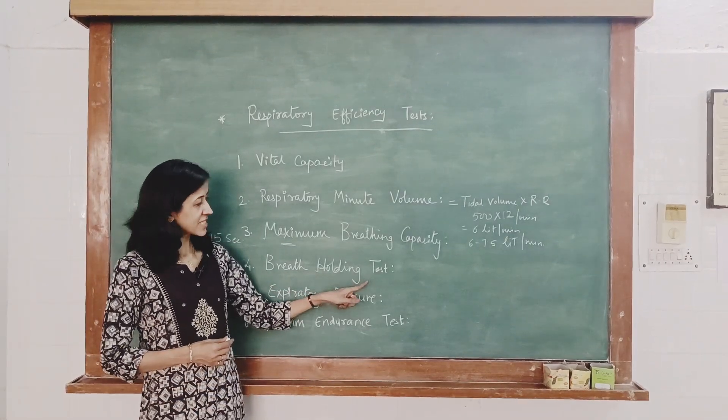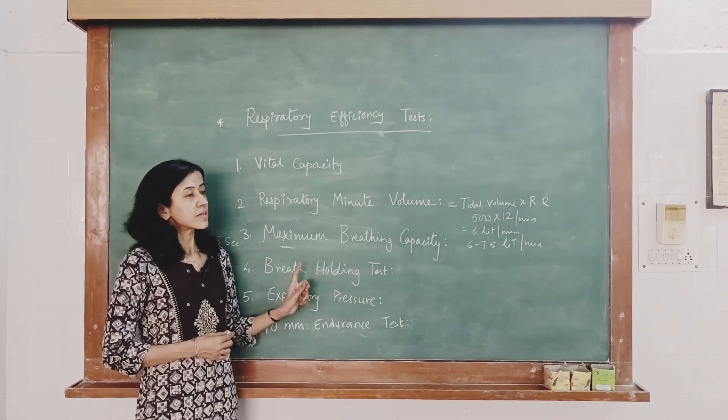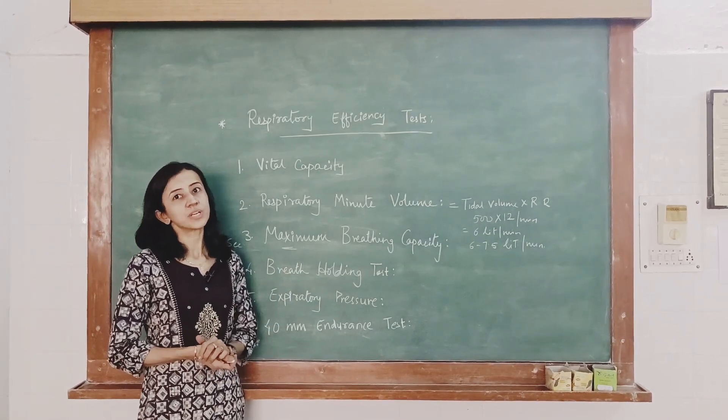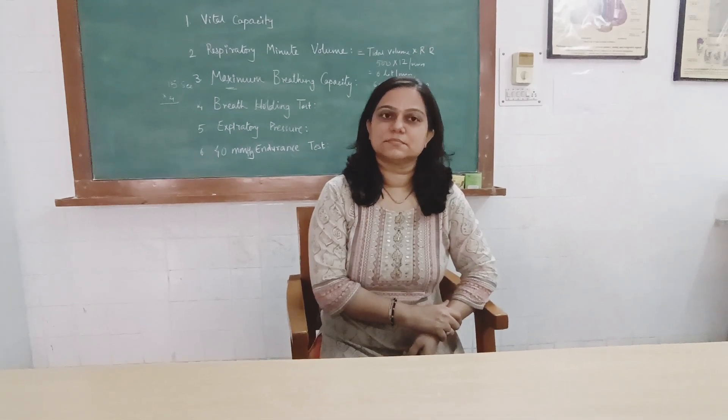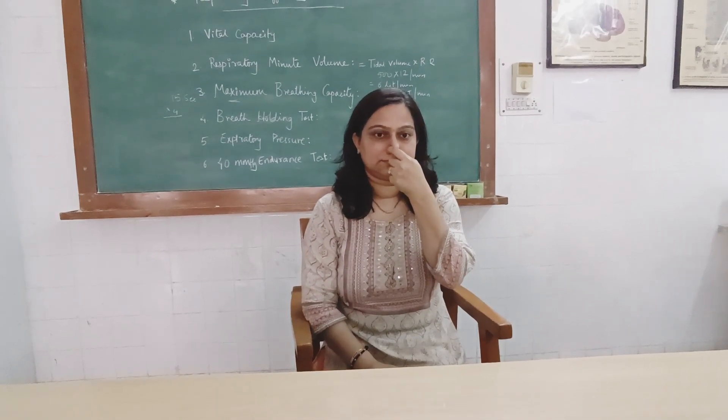Next is the breath holding test. Ask the subject to hold the breath after a normal expiration and measure the maximum time — known as the breaking point — up to which the breath can be held. The normal breath holding time for an adult is about 45 seconds to 1 minute. The breaking point occurs due to accumulation of carbon dioxide in the blood, which stimulates the respiratory centers.